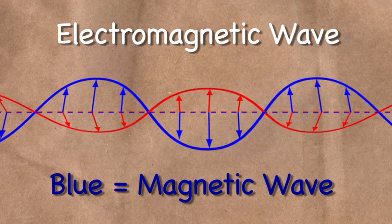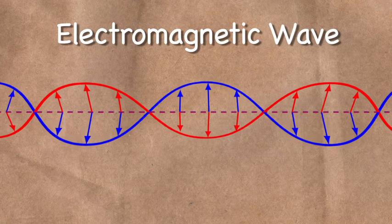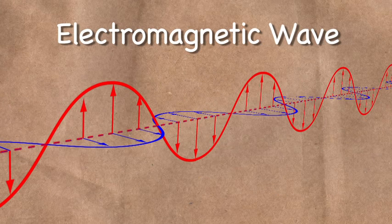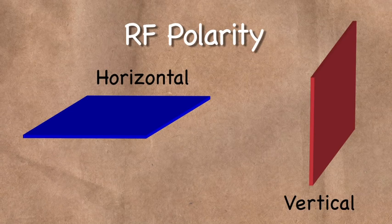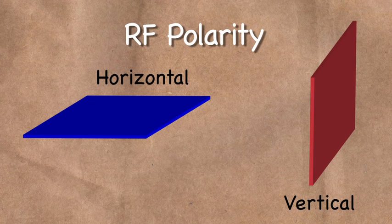Because the electromagnetic waves have a distinct orientation, they are said to be polarized. The polarity of an RF signal can be horizontal, vertical, or even circular.